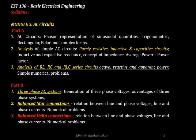Before we move into this specific topic, a bird's view on Module 3 from which this particular topic is extracted. Module 3 can be broadly divided into two parts, Part A and Part B, in which Part A deals with phasor representation, analysis of purely resistive, inductive and capacitive circuits, followed by analysis of RL, RC and RLC circuits. In Part B, we discussed about a three-phase AC system. In the previous lecture, we discussed about a balanced star connected system. In today's lecture, we will be discussing on balanced delta connection.